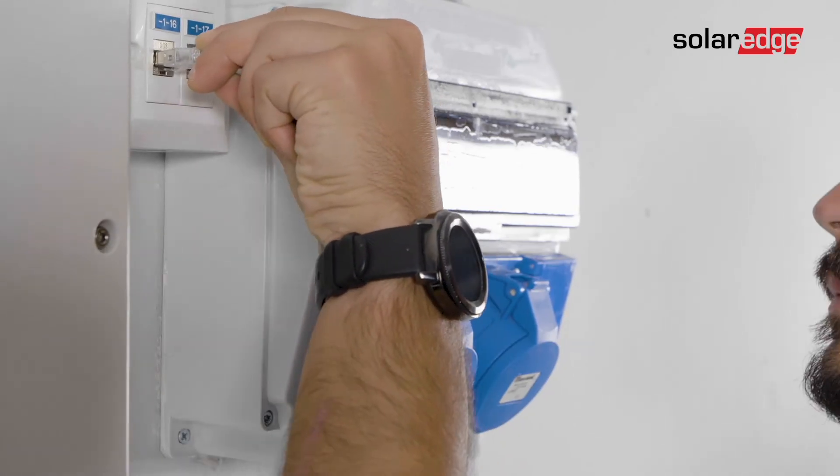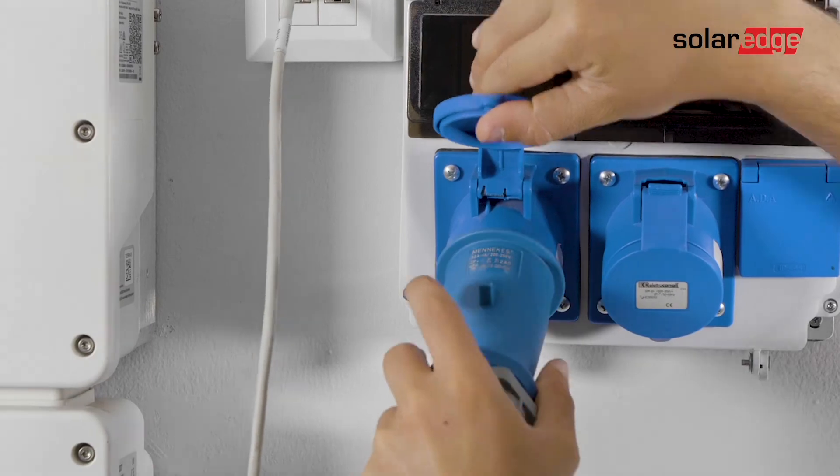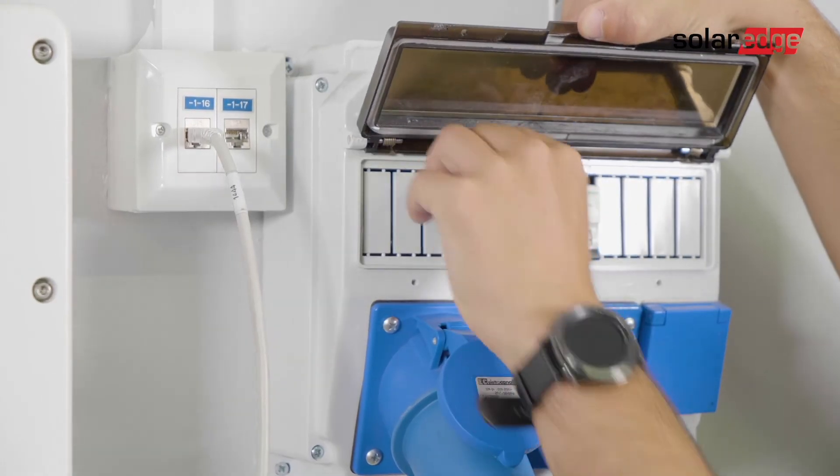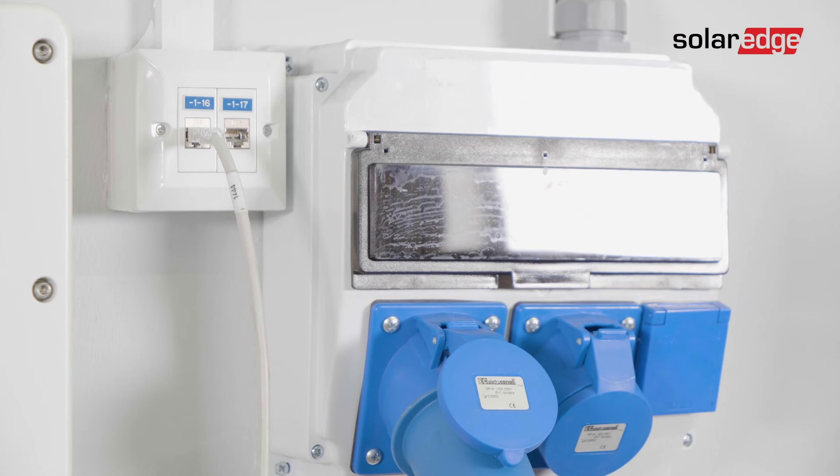Connect the inverter to Ethernet, then to AC and turn on the AC circuit breaker. Observe the local regulations and technical rules when connecting to the AC mains.